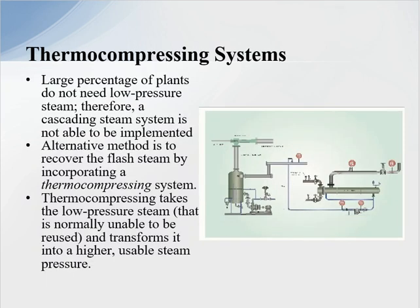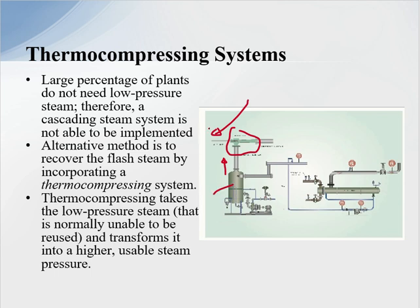The next application is thermal compressing. This is where we do not have a use for low pressure flash steam — therefore we use a thermal compressor to take the low pressure flash and bring it up to a higher pressure. Here is the thermal compressor system: this is the low pressure steam coming off of the flash tank, and we have a motive steam pressure at a higher level. For example, if the flash tank is at 30 PSI, our motive steam could be 150 PSI or higher, and we would produce 60 PSI intermediate pressure to go out into the system.